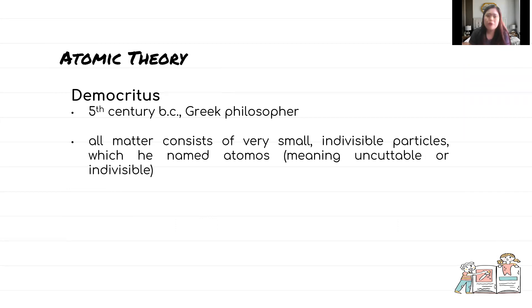That's the first name written in the history of the discovery of atoms. Democritus was a Greek philosopher in 15th century BC. He was the first one to describe that matter consists of very small, indivisible particles, and he named it atomos.